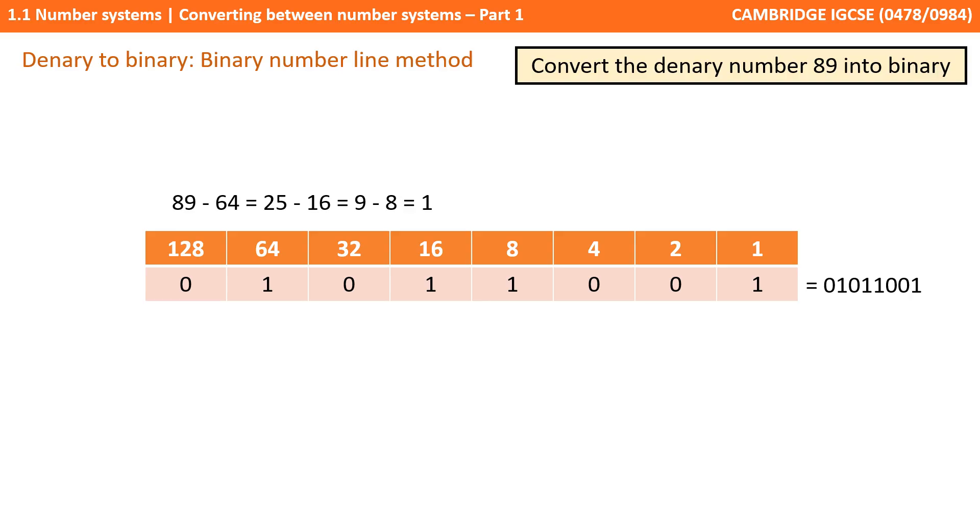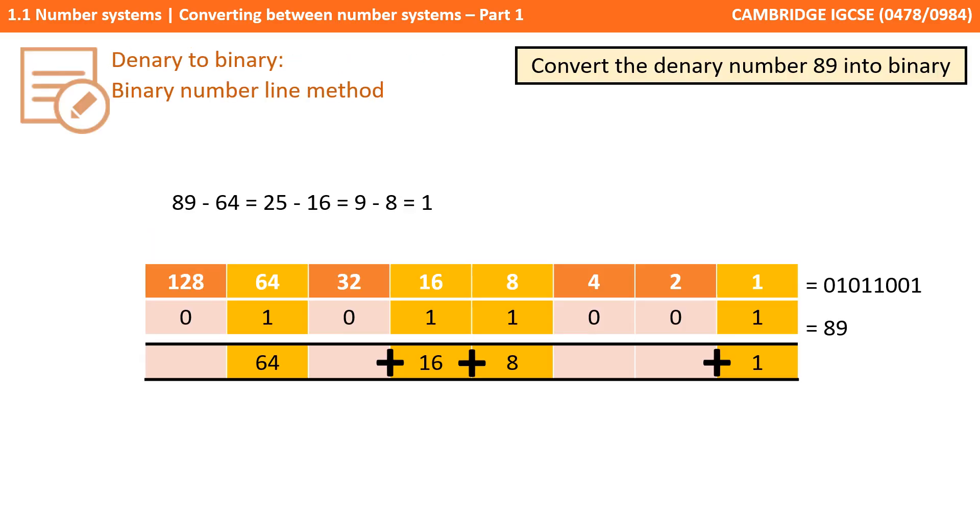And again, you read from left to right, and you've got the binary for 89. To convert from denary to binary, always use this number line. It's worth showing your working in an exam, and it ensures you're less likely to make a silly mistake. You can always confirm your answer by simply adding up the columns you've got 1s in. So we have a 64, and a 16, and an 8, and a 1, which of course is 89, the number we were expecting.